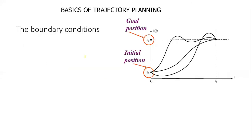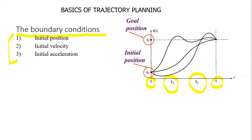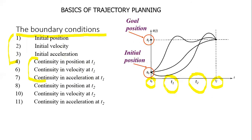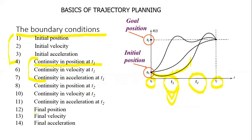For any order of polynomial, we define boundary conditions. Suppose two intermediate points t1 and t2 are defined between the initial and final time. Corresponding to these four time points, we get boundary conditions regarding position, velocity, and acceleration at each point. Continuity at t1 means one position value comes from one polynomial and another from the adjacent polynomial. The same applies at t2, and final boundary conditions address position, velocity, and acceleration at the final time.